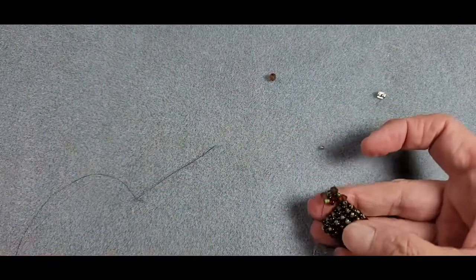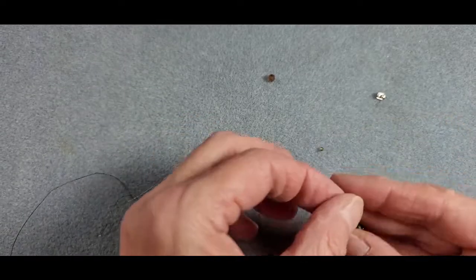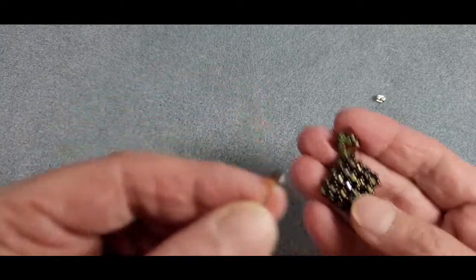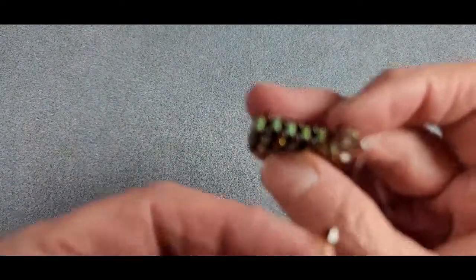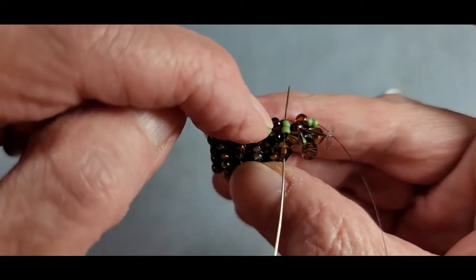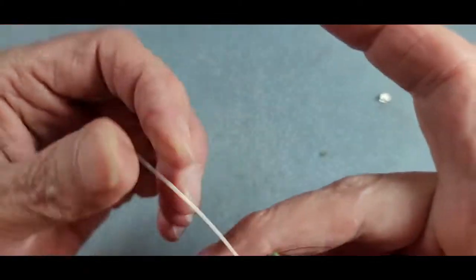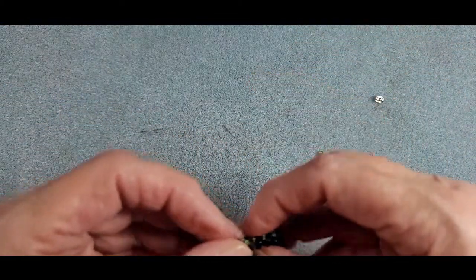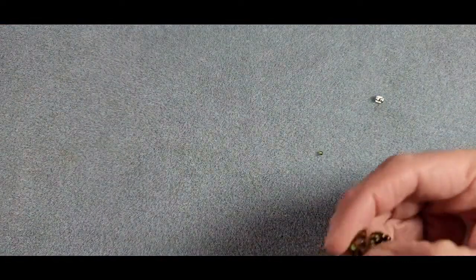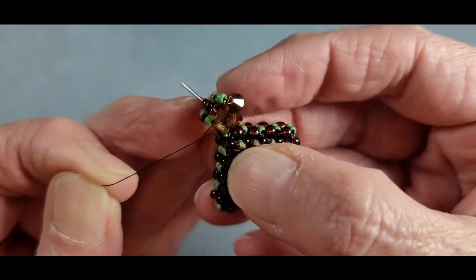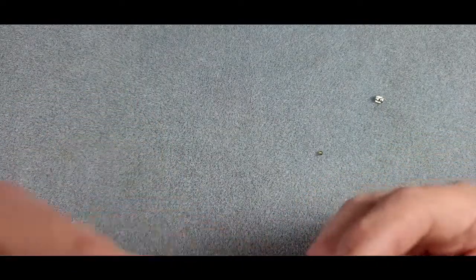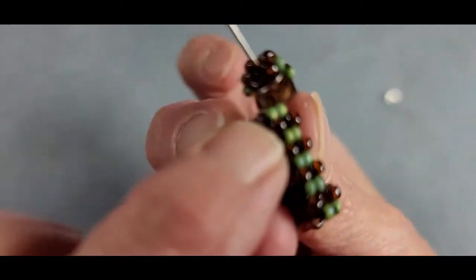So now we just have our last little bicone bead to put in place. We're going to pick up that bicone. We are coming out of these two 11-0s here. We're going to go back through the two 11-0s on our sumptuous square. And before I pull it really tight, I need to get my post into position. And now you can see that I have encased my little post earring inside of this little cube. And I am exiting these two seed beads right here on the base.